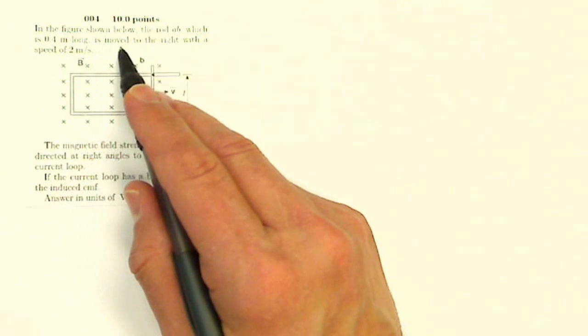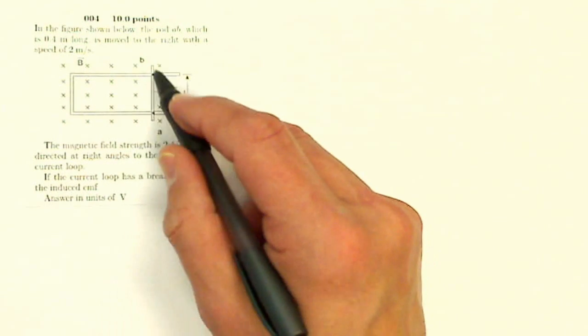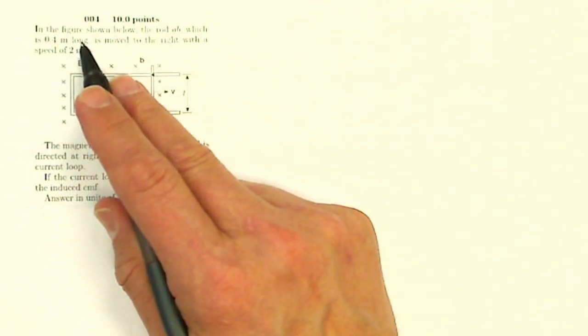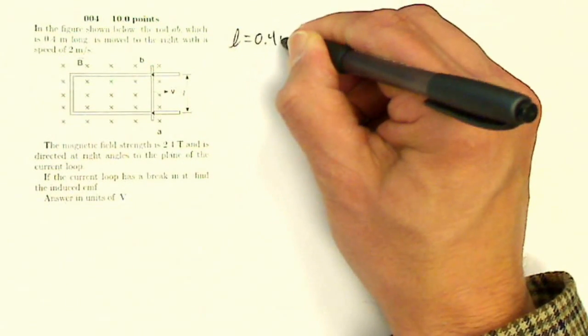This question says, in the figure shown below, the rod AB, here it is, which is 0.4 meters long, so L equals 0.4 meters.